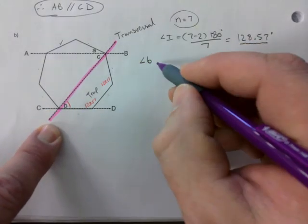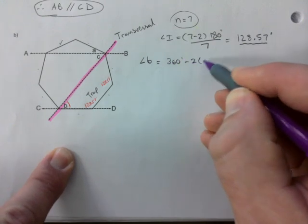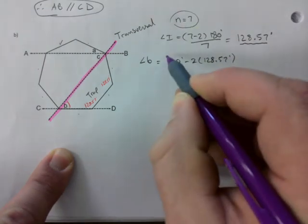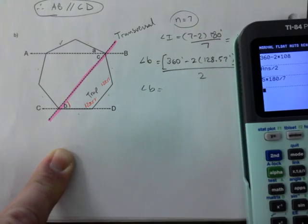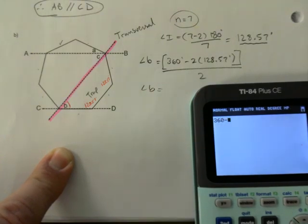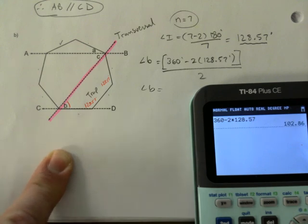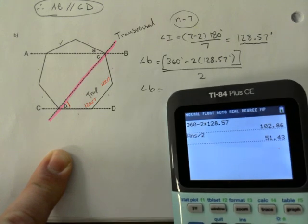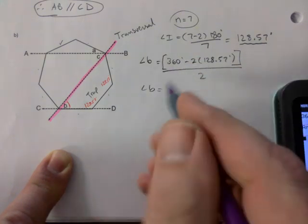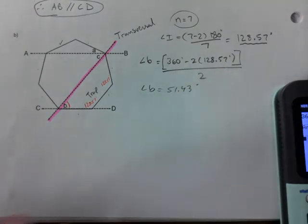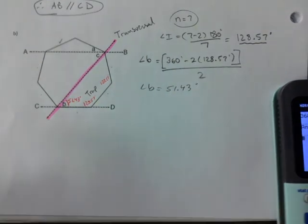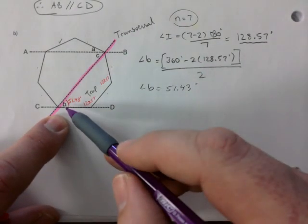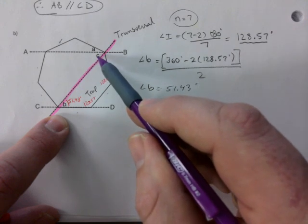So let's go ahead and do that. If there had been no letter, you put a letter in there. So B is 360 minus 2 times 128.57, square bracket that whole thing, and then you divide it by 2. So it's basically using the skills you've learned and just applying it to other circumstances, other situations. I get 51.43.